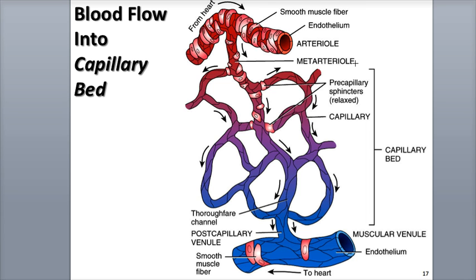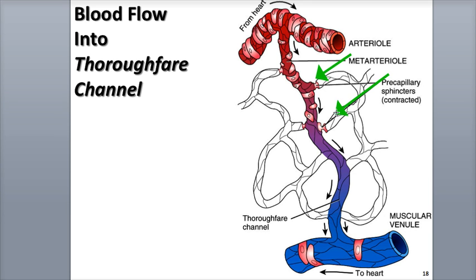The pre-capillary sphincters, located between the arteriole — specifically the meta-arterioles — and the capillary, regulate the blood flow into the capillary bed. When the sphincters are relaxed, as shown here in the diagram, they open to allow blood to flow into the capillaries. When they contract, they close or partially close to slow down or stop blood flow into the capillaries. There is a cycle of alternating contraction and relaxation of the meta-arterioles and the pre-capillary sphincters, called vasomotion, which happens 5 to 10 times every minute. At any moment in time, about one-quarter of the capillaries in the bed have blood flowing through them.